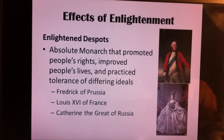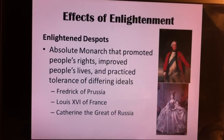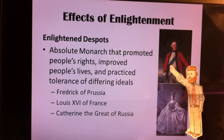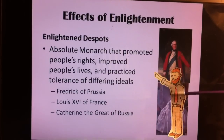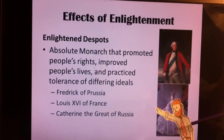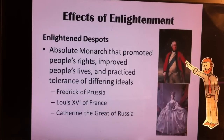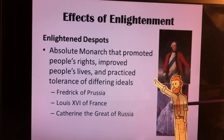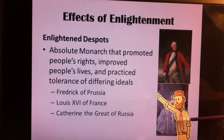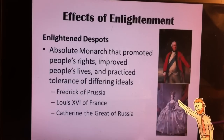Some of the effects of Enlightenment were that you had enlightened despots — absolute monarchs that promote people's rights, improve the lives of those under them, and practice tolerance for differing ideals. Examples include Frederick of Prussia, Louis XVI — who we learned about in the French Revolution and was actually beheaded — but he was an enlightened despot who tried to take care of the people — and Catherine the Great of Russia.